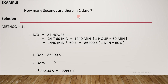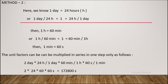Now the last example: how many seconds are there in 2 days? Using the simple method first — 1 day = 24 hours, 1 hour = 60 minutes, so 24 × 60 = 1440 minutes; 1 minute = 60 seconds, so 1440 × 60 = 86,400 seconds per day. For 2 days: 2 × 86,400 = 172,800 seconds.